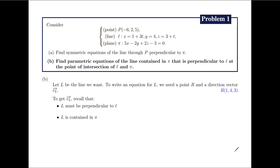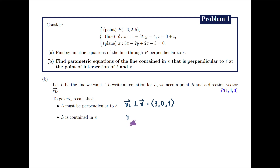Next, to get a direction vector V sub L, recall that capital L must be perpendicular to script L, so its direction vector V sub L must be perpendicular to a direction vector of script L, say the vector V with coordinates 3, 0, and 1. Also, capital L is contained in the plane pi, so its direction vector V sub L must be perpendicular to a normal vector of pi, say the vector N with coordinates 5, negative 2, and 2.